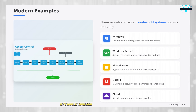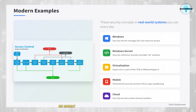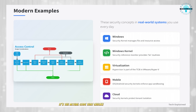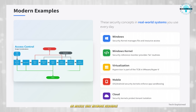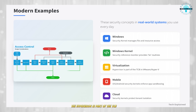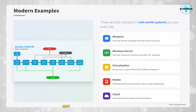Let's look at some real-world examples to make this even more concrete. In your Windows computer, the security kernel is part of the operating system that manages access to files and resources — it's the actual code that checks if you're allowed to open that file or access that network resource. In a virtual machine environment like VMware or Hyper-V, the hypervisor is part of the TCB; it has to be trusted because if it's compromised, every virtual machine running on it is at risk.